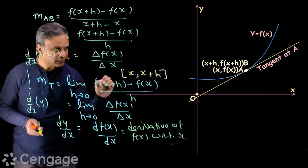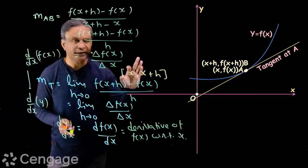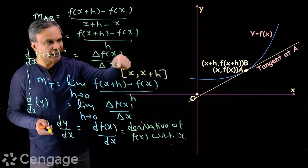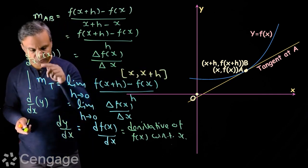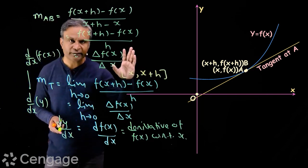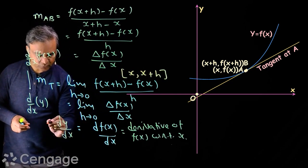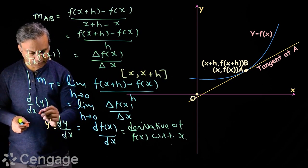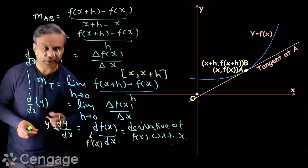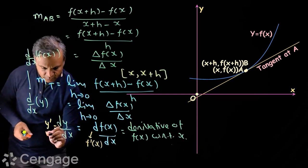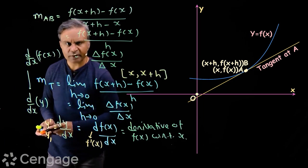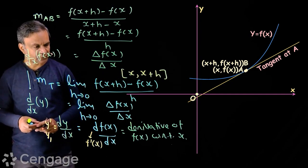This is the instantaneous change in the value of y with respect to x at point A. The ratio delta f(x)/delta x is the average change over the interval, while dy/dx is the instantaneous change of y with respect to x at point A. This derivative is also written as y prime, y dash, f prime of x, or f dash of x. Sometimes we write y₁, meaning the first derivative of y with respect to x — we are differentiating the function f(x) for the first time.